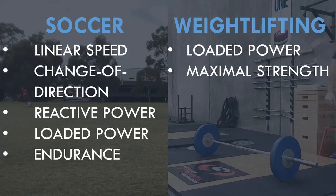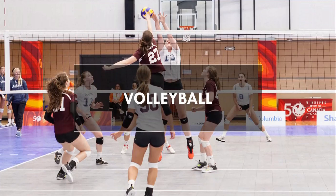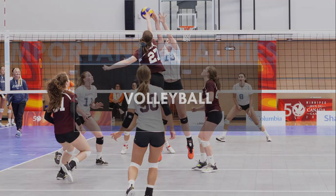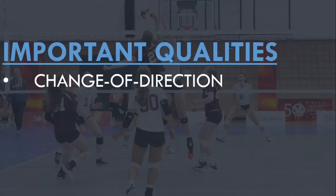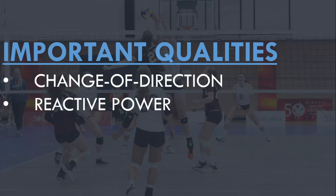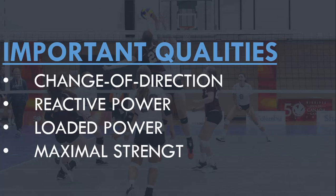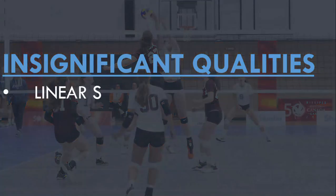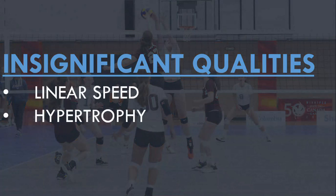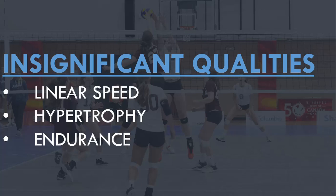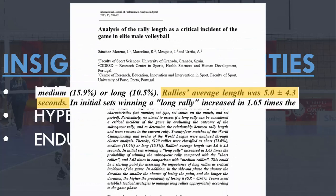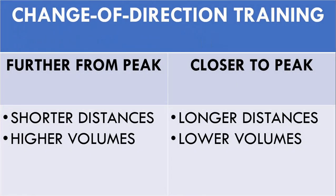Not all athletes will require all of these qualities, and different athletes will emphasize different qualities to a greater or lesser degree. The qualities important for the athlete will be trained at all times throughout the year and can be periodized to peak at a given time. Let's explore how we can use a vertical integration model for a volleyball team or athlete. A volleyball player requires change of direction ability, reactive power for repeated jumping, loaded power for vertical jump propulsion, and maximal strength to indirectly enhance those qualities.